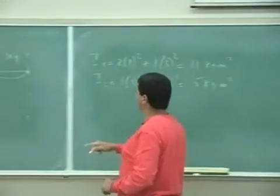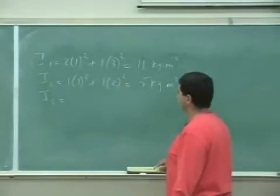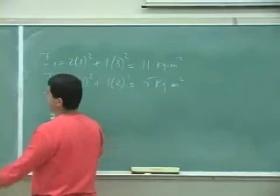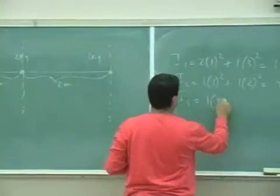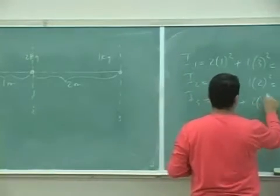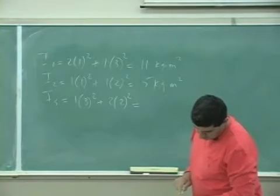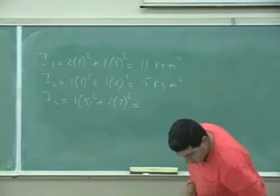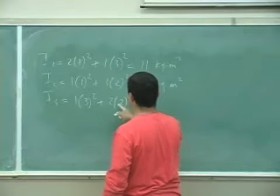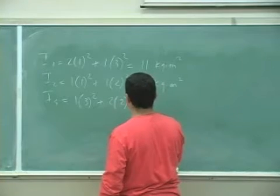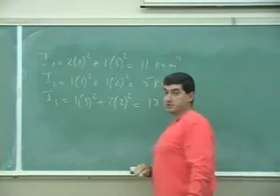How about the moment of inertia about axis 3? So it's going to be 1 times this distance squared, 3 squared, plus 2 times 2 squared. So that's going to be 8 plus 3 is going to be, oh, it's going to be 9 or 17. Oh, that's the hardest one, right?